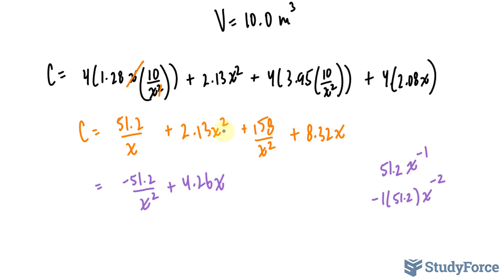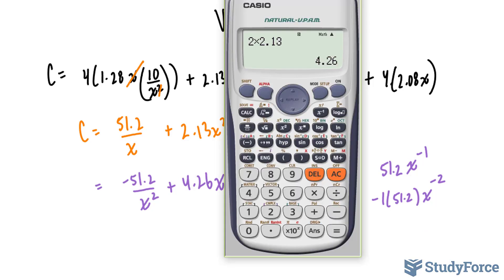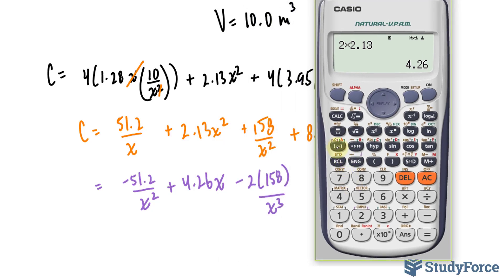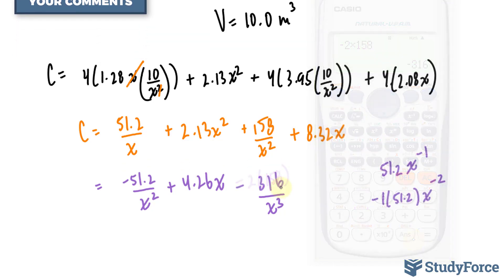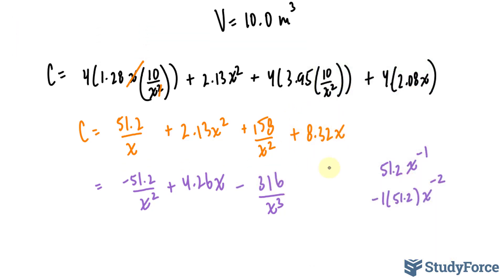This term becomes negative 2 times 158 over x to the power of 3. That's equal to negative 316. And lastly, the derivative of this term is equal to 8.32. At this stage, and just like with all the other questions we've done, we would have to set c prime equal to zero.